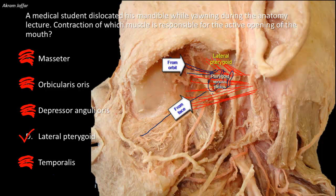The plexus drains into the maxillary vein, and this maxillary vein unites with the superficial temporal vein to form the retromandibular vein. The role of the plexus is to act as a peripheral heart, aiding venous return by the pumping action of the lateral pterygoid muscle. The plexus is valved: it sucks blood from incompressible parts including the face and orbit, then pumps it back into the maxillary veins.